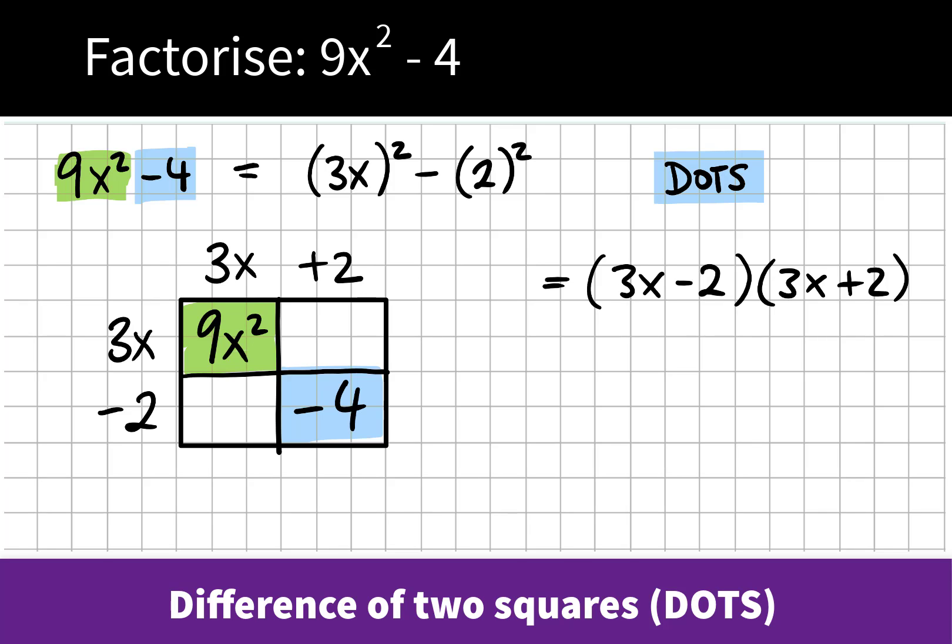Now if we multiply out to find the missing diagonal, we see 3x by 2 is 6x, and 3x by negative 2 is negative 6x. And when we add this diagonal, we get 0x, which is the case.